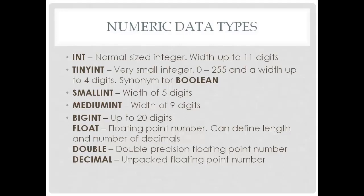Small int can have a width of five digits, medium int a width of nine digits, and big int can have up to 20 digits. We also have a float, which is a floating point number where you can define length and number of decimals. Double is a double precision floating point number, and decimal is an unpacked floating point number. Those are the numeric data types.